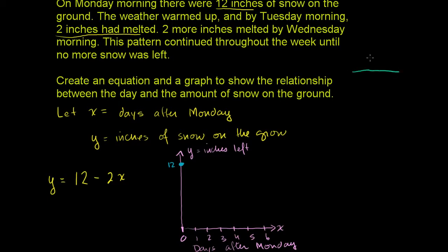So if we do x and y, this is the days after Monday: 0, 1, 2, 3, 4, 5, 6. And then on the first day, we have 12 inches on Monday, 0 days after Monday. Then we lose 2 inches each day. On day 1, we have 10. Day 2, 8. Then 6, 4, 2, 0.